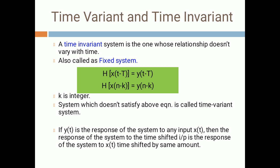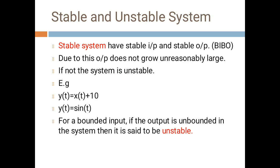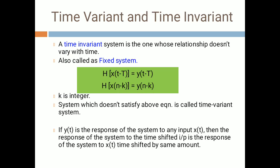If y(t) is the response of the system to any input x(t), then the response of the system to a time-shifted input is the response shifted by the same amount. That means if x(t) maps to y(t), and the input is shifted by time T, then the response is also shifted by time T. If this property holds, the system is time invariant; if the response varies with time, the system is called time variant.